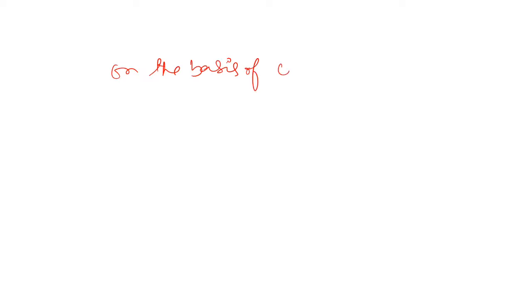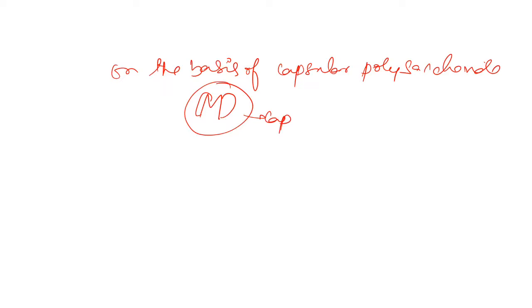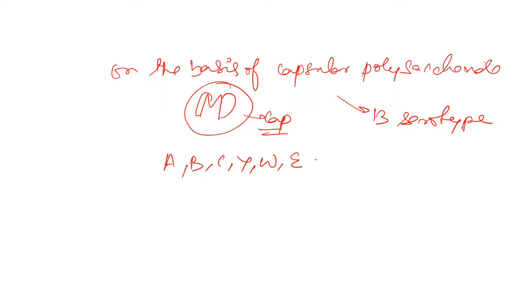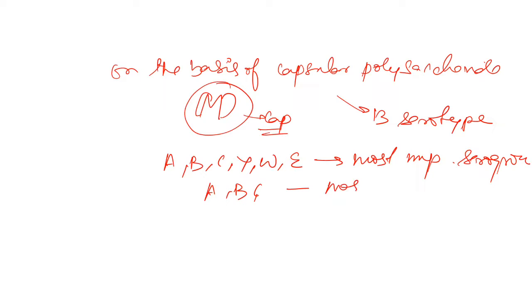On the basis of capsular polysaccharide, meningococci is divided into 13 serotypes. A, B, C, Y, and W are the most important serogroups, and A, B, C are the most infective serogroups.